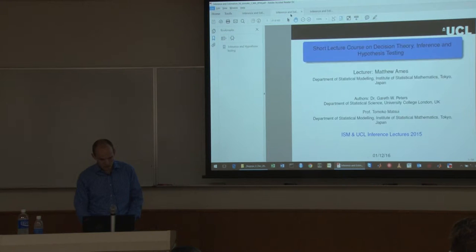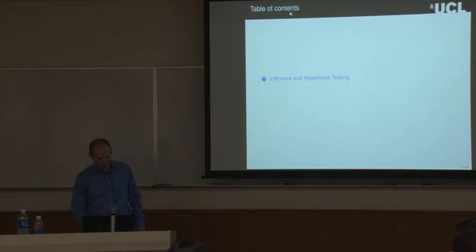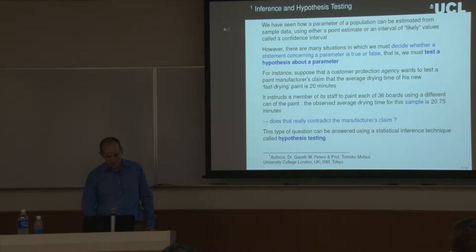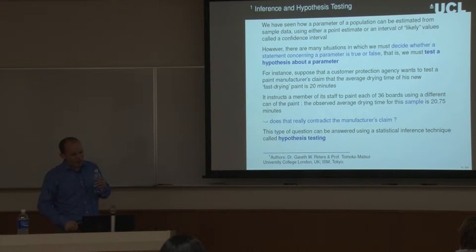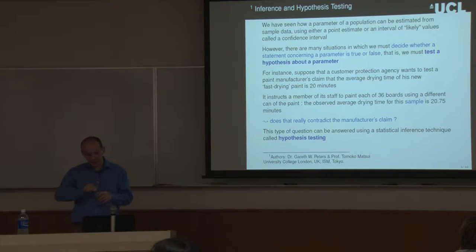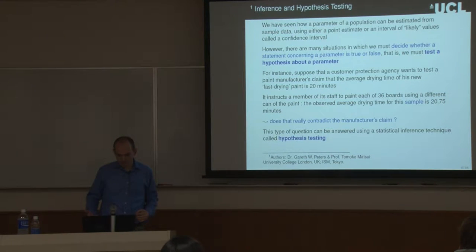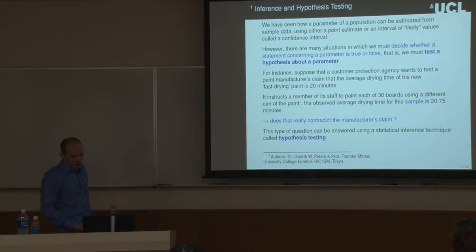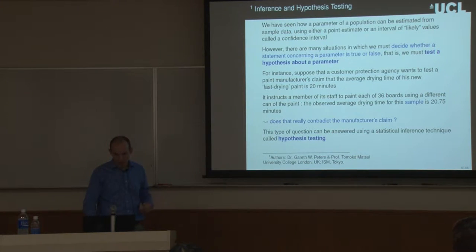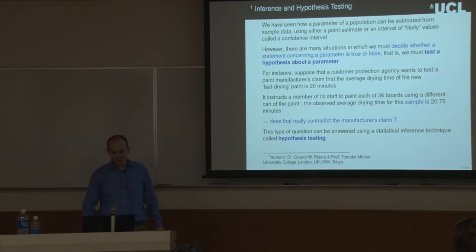Moving to the second set of slides, we started talking about hypothesis testing. We introduced this example of a paint manufacturer claiming that their new fast-drying paint dries in 20 minutes on average. A member of staff was instructed to paint 36 fence panels, record the drying times, and test this claim of an average drying time of 20 minutes.